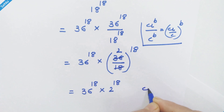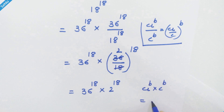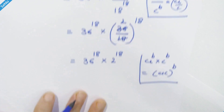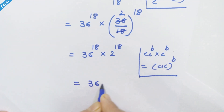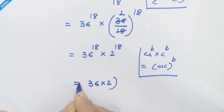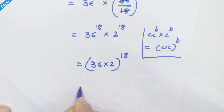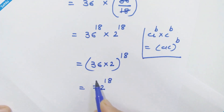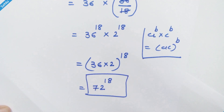Now we use the rule: a raised to b into c raised to b equals a into c whole raised to b. So we can write this as 36 into 2 whole raised to 18. Now 36 into 2 is 72, so we get 72 raised to 18, and this is the simplified answer. Thanks for watching, don't forget to subscribe — see you in the next one, bye bye!